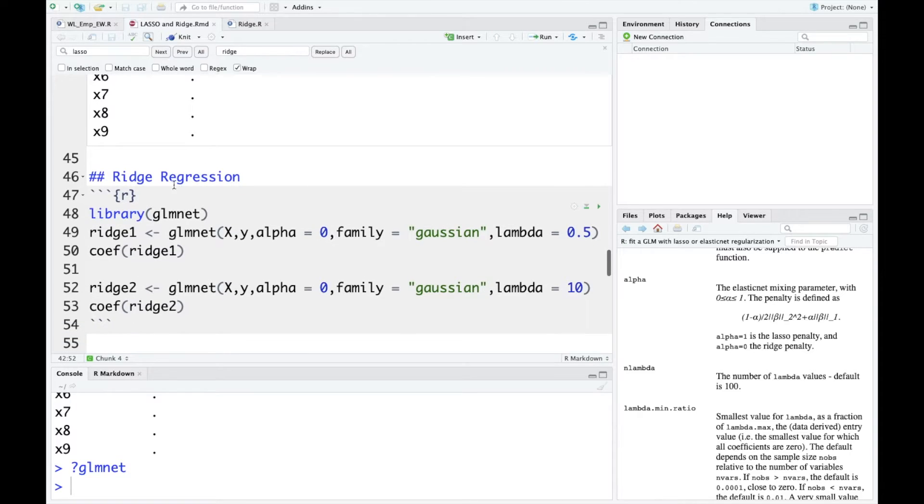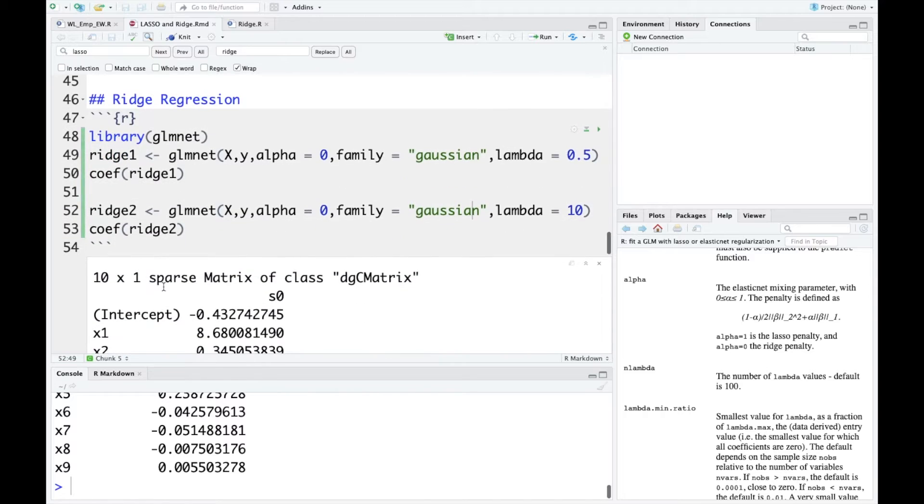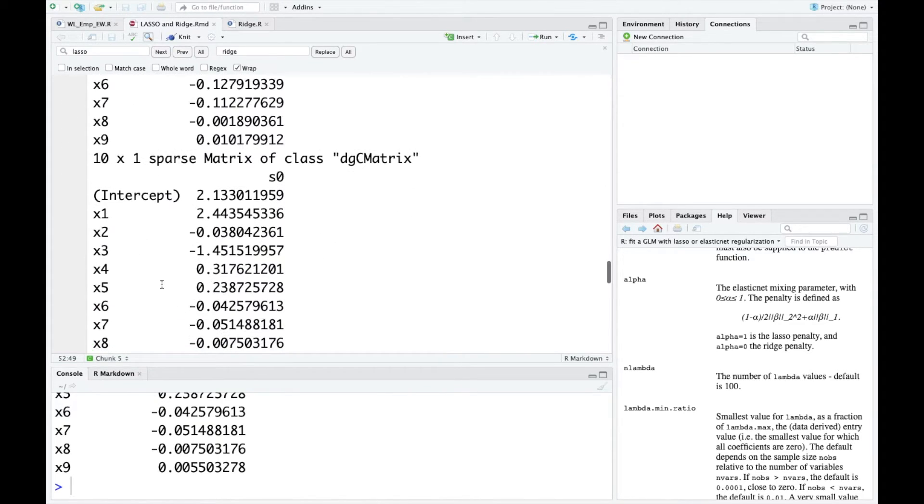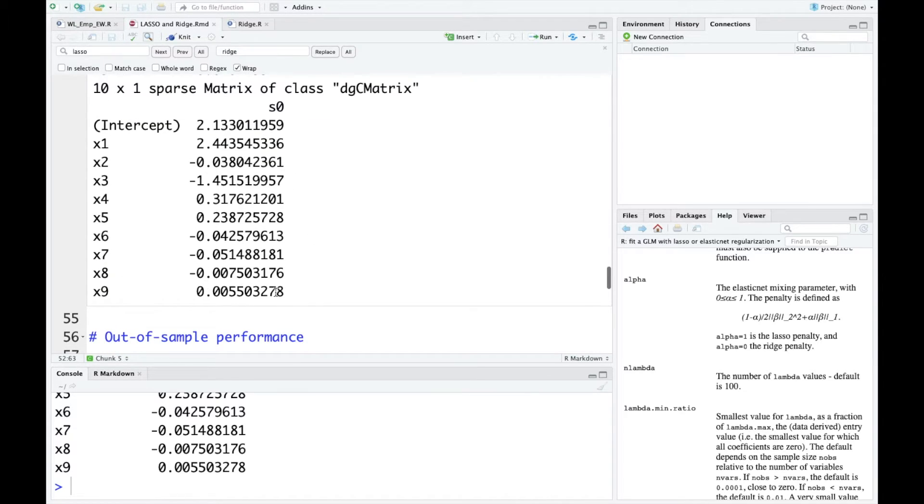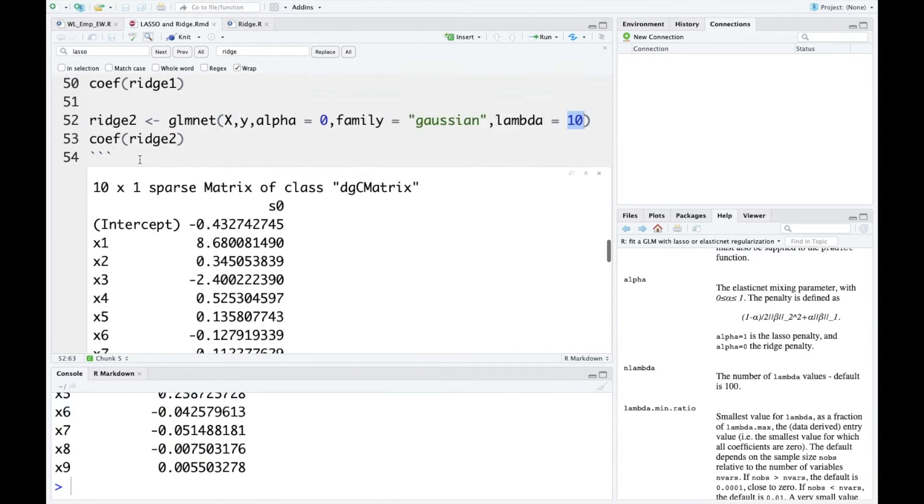So now let's move on to ridge regression. So for ridge regression, as I have mentioned just now, you just need to set alpha equals to 0. And here I also tried two different lambda values, which are 0.5 and 10. Again, you can run this whole chunk of codes and then you will see, even though when I set lambda as a very big value as 10, none of the coefficients are shrunk to 0. This is a major difference between Lasso and ridge.